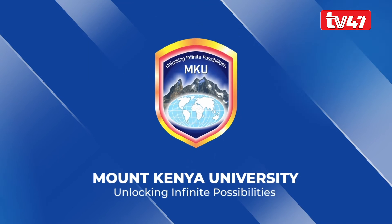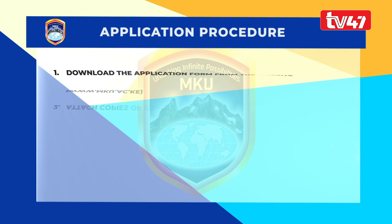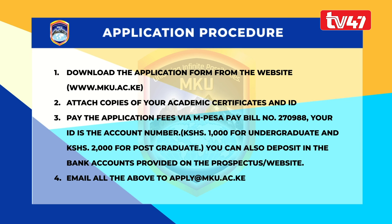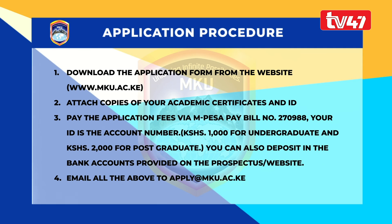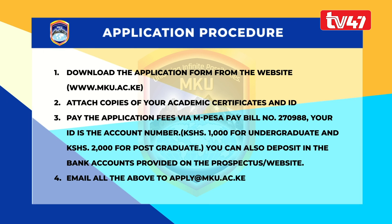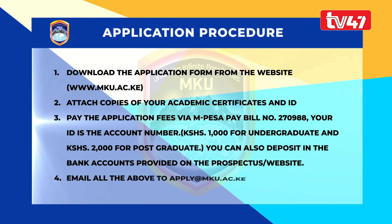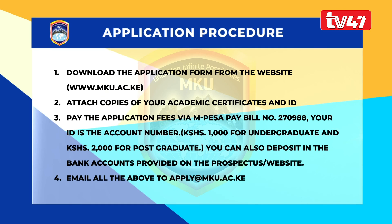The following are the steps to follow to complete your online application: Download the application form from the website www.mku.ac.ke. Attach copies of your academic certificates and ID. Pay the application fees via M-Pesa Pay Bill number 270-988 — your ID is the account number. Two thousand shillings is the charge for a postgraduate. You can also deposit in the bank accounts provided on the website. Then email all the above to apply@mku.ac.ke. Thank you.